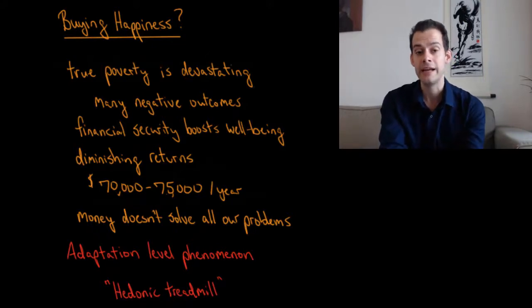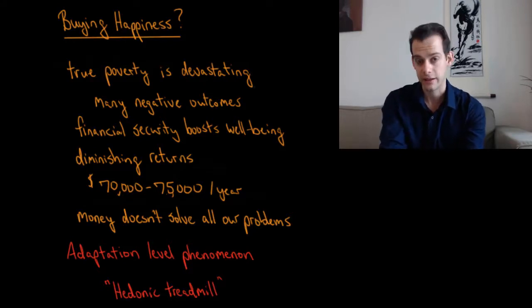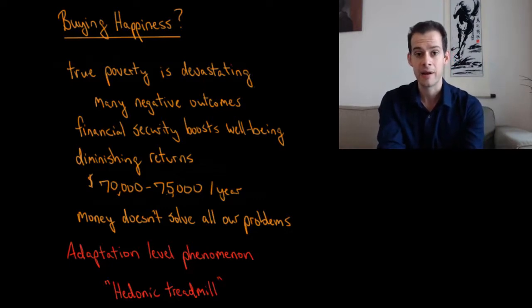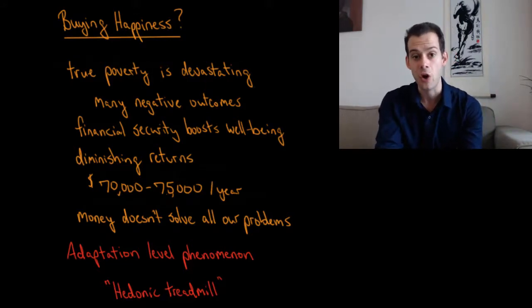But we experience diminishing returns. This means that as we get more and more money, each dollar contributes less to our well-being. Eventually we get to the point where each additional dollar doesn't really do anything for our well-being. This brings us to research by Daniel Kahneman that has suggested that this improvement in well-being seems to flatline somewhere around $70,000 to $75,000 per year, at least for people living in the United States. Before that, increases in our income can contribute to increases in our well-being, but eventually we have a flattening off where additional money doesn't seem to improve well-being. Of course this would be true—money doesn't solve all of our problems.